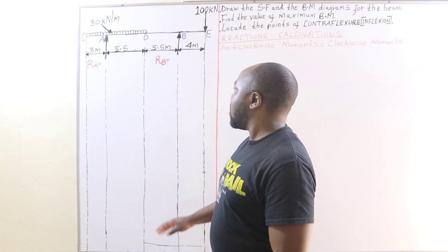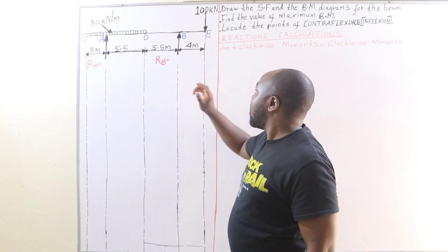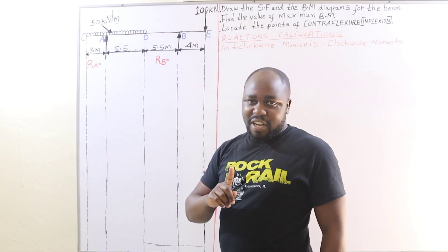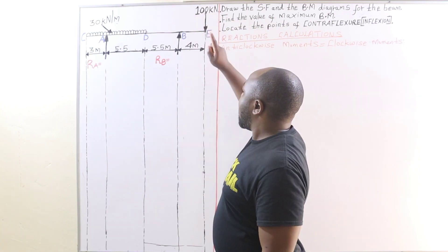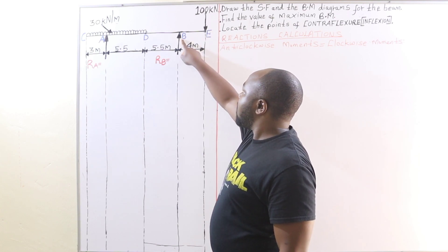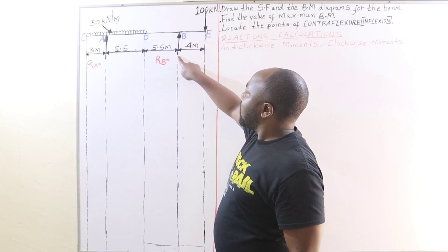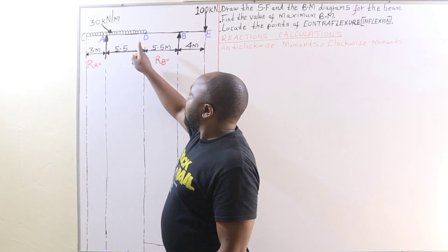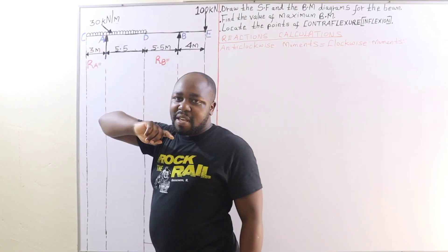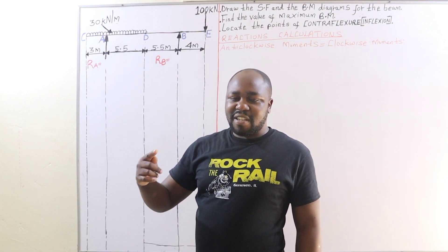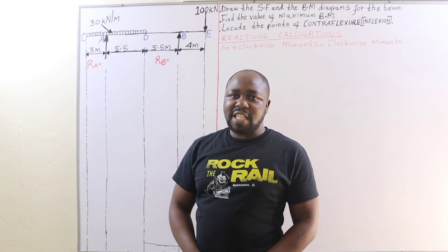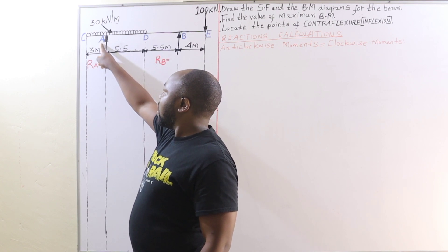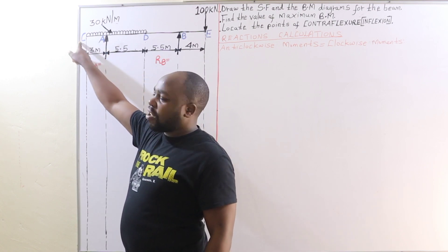In this case, our beam is loaded as follows. At end E, it is loaded with a point load of 100 kilonewtons. The beam is overhanging between point B and E. At point B, it has a support — a support can either be a wall or a column. Between point D and C, the beam is loaded with a uniformly distributed load of 30 kilonewtons per meter. On the left-hand side, the beam is overhanging beyond point E all the way to point C.